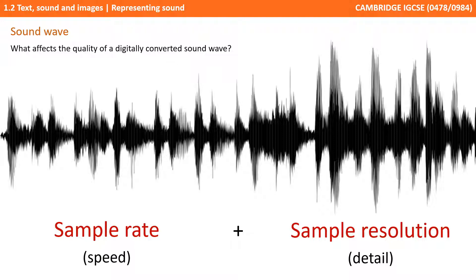The sample rate is how often an audio analogue sound wave is sampled. The sample resolution is, at each of those sampling points, what is the level of detail, depth or fidelity that that audio analogue wave was recorded at. As either or both of these factors increase, the quality of the overall sound wave converted into digital form increases, but obviously the size of the sound sample also increases.